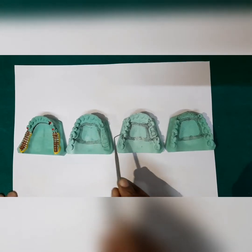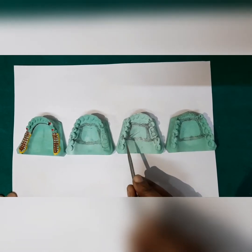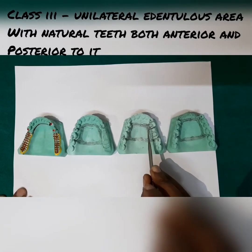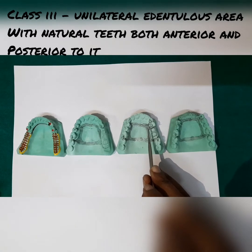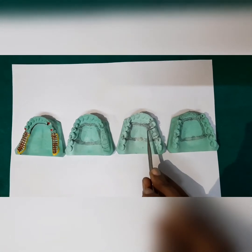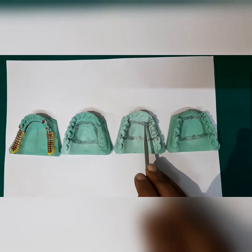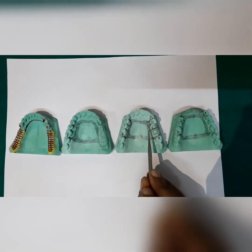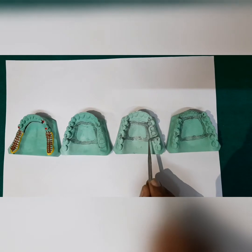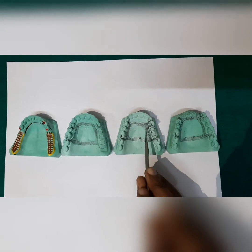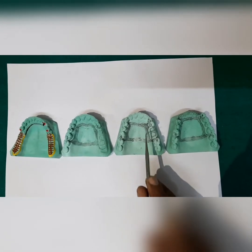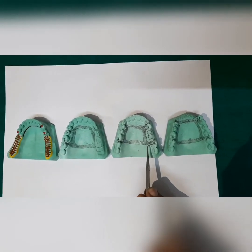Class 3 is a unilateral edentulous space which is bounded by natural teeth both anterior and posterior to it. So you have an edentulous space which has natural teeth both anterior and posterior to it.